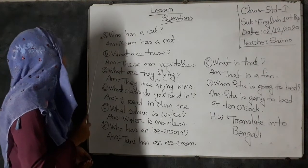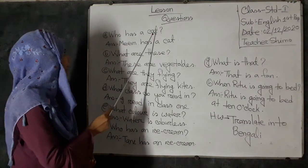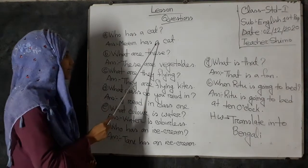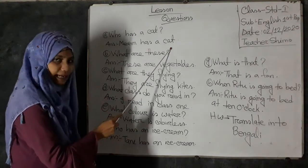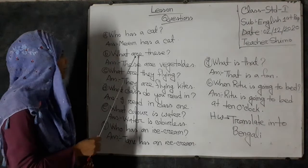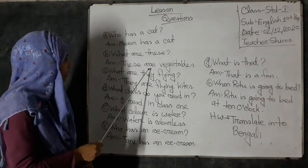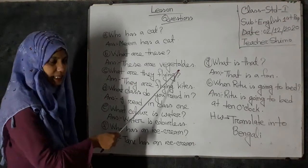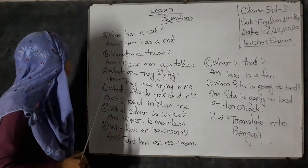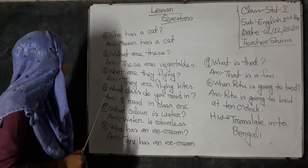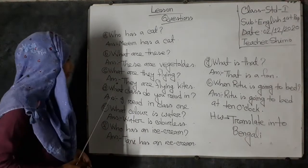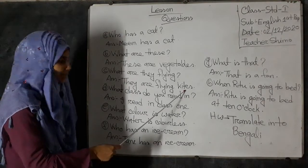A. Who has a cat? Meme has a cat. B. What are these? These are vegetables. C. What are they flying? They are flying kites.